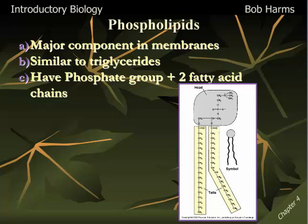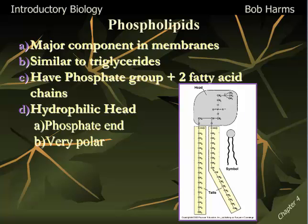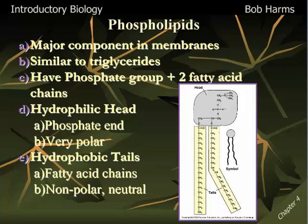We have two long fatty acid chains — those fatty acid chains could be saturated or unsaturated — and then the head of the chemical has that strongly charged phosphate group. The head is going to be very hydrophilic because it has that phosphate group; water is going to be really attracted to it, and it will mix very well with water. But those long tails are still going to be very hydrophobic — because of their nonpolar nature, they're not going to mix well with water. So we get this unusual chemical where one end is very attracted to water and the other end is repelled by water.